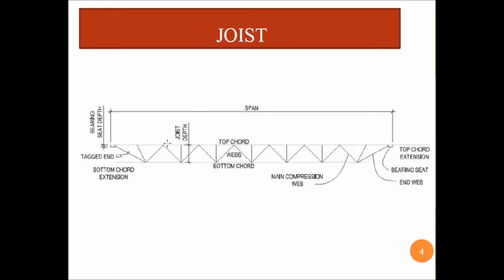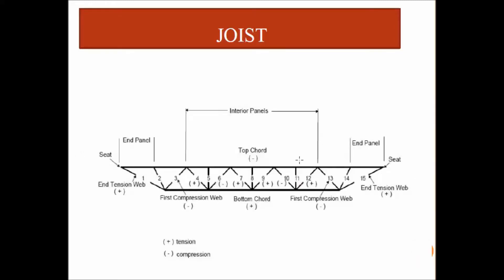This simple image shows the joist. The horizontal distance from extreme left to extreme right is called the span length. We can also see the joist depth, the top chord, and the bottom chord. The bottom chord is the main tension member and the top chord is the compression member, illustrating how load is distributed through tension and compression.